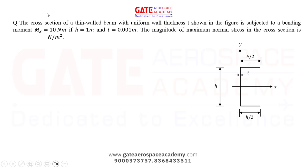The cross section given is a C-type channel. The first example of thin section in our lecture was a C-type channel only, and it appears in many tests as well. It is obviously symmetrical about the x-axis, so its centroid will lie on the x-axis itself. We have to find the magnitude of maximum normal stress.